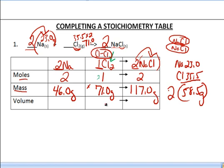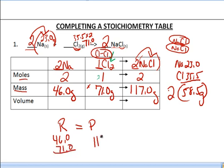If you want to double-check yourself — and I highly recommend this — add all of your reactants up and they're going to equal all of your products. So if you add the 46 plus the 71, you should equal 117. If I were doing this on a quiz or a test where it's really important to get this table right, I would double-check myself before I move on.